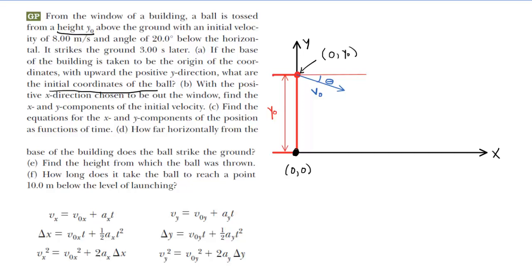We don't actually have a value of the height of the building, at least not yet, so for now part A has to have an answer expressed in terms of y₀. Again, the initial coordinate will be (0, y₀). This would be the correct answer to part A of the question.